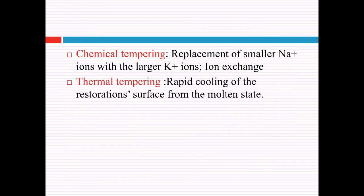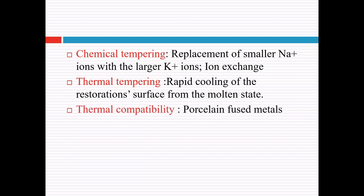Next is thermal tempering, which involves rapid cooling of the restoration surface from the molten state, which introduces residual compressive stresses. This rapid cooling is also called quenching and it produces a skin of glass surrounding the molten core. When this core shrinks later during solidification, it creates residual tensile stress in the core and residual compressive stresses within the outer surface, thus strengthening the ceramics.